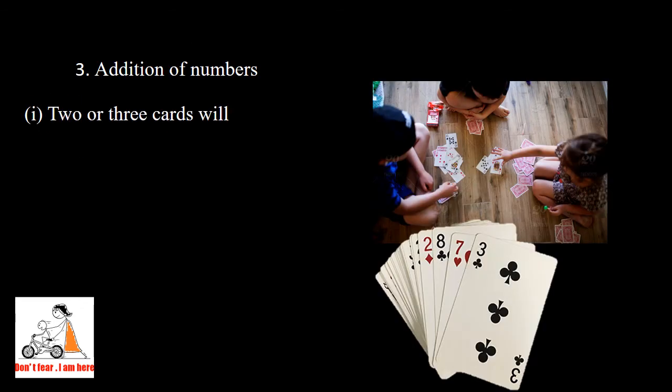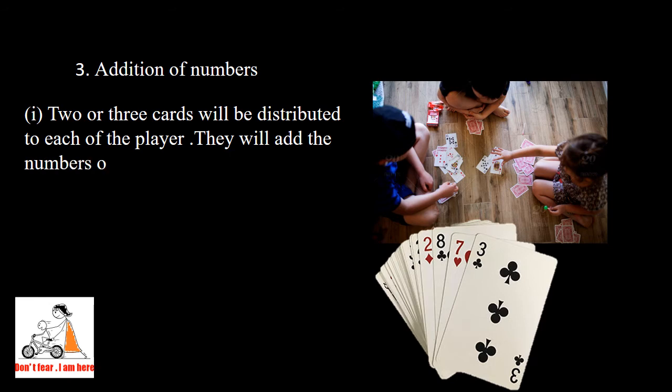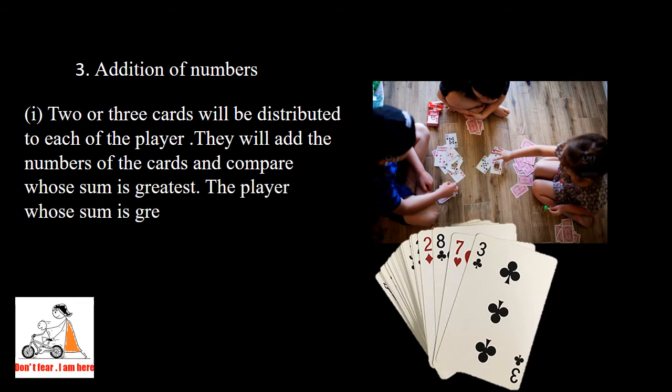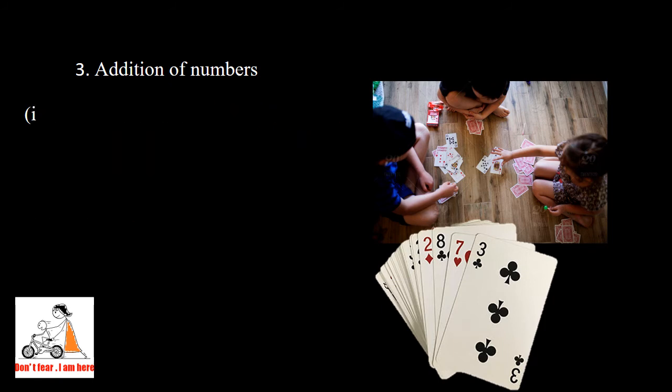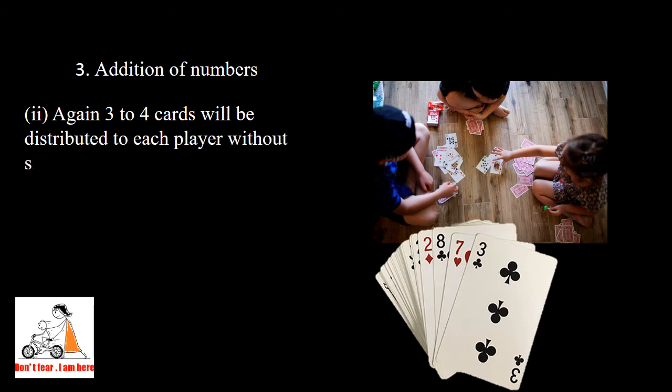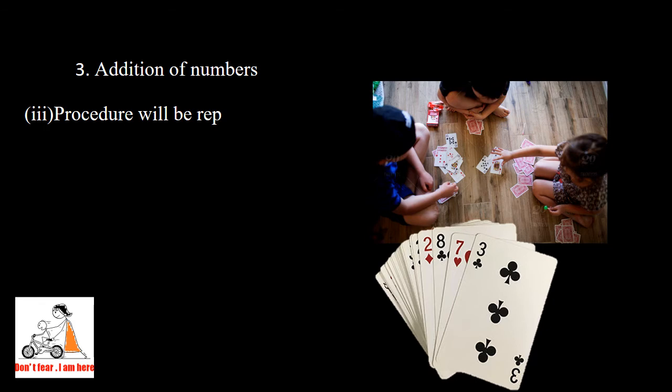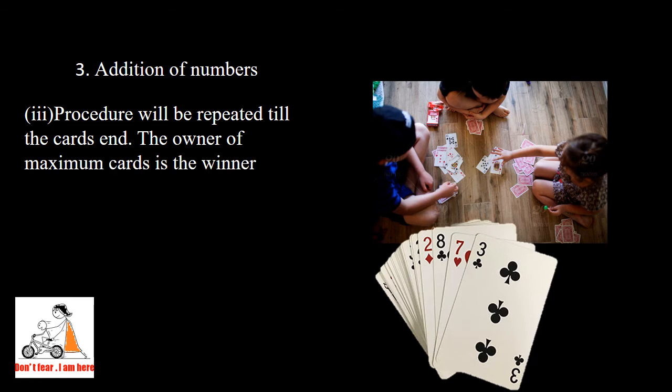Next is addition of numbers. Here, two or three cards will be given to each player. They will add the numbers of the cards and find whose sum is greatest. He or she will take all the cards distributed in the turn. Again, three to four cards will be distributed. They will add them and say the highest. This will repeat till the cards are finished. The procedure will be repeated. The owner of maximum cards is the winner.